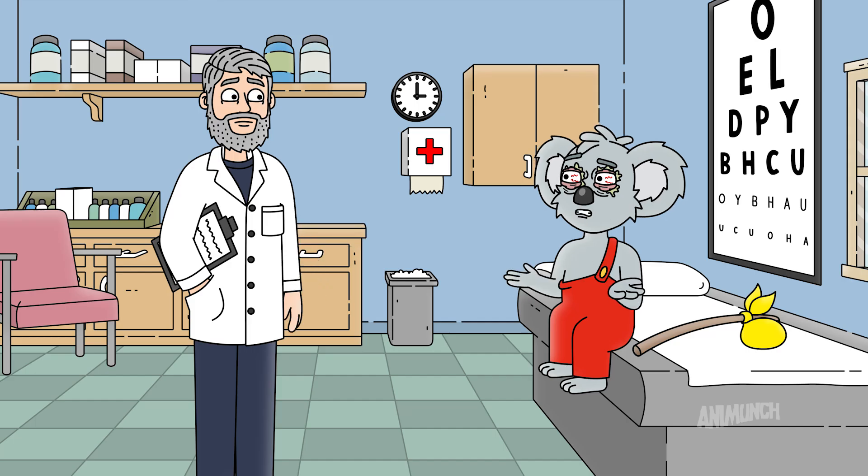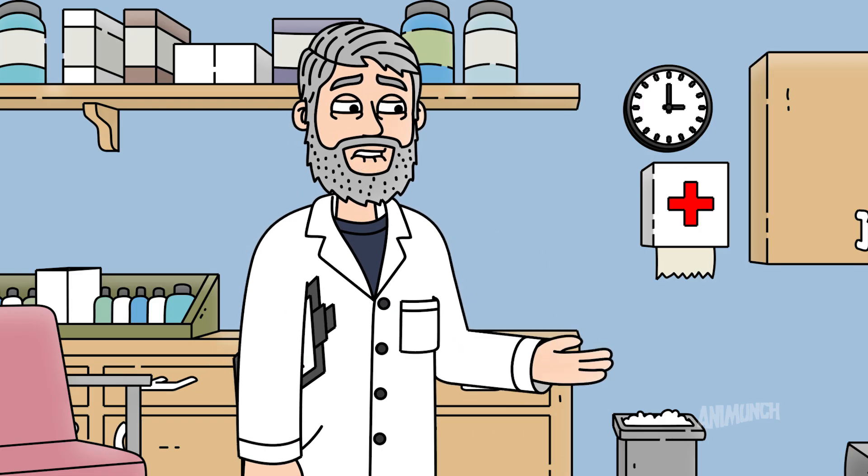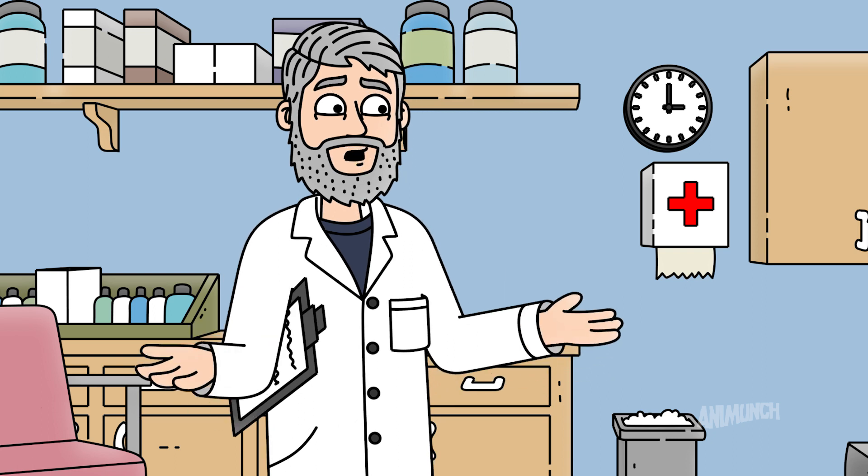But there's 50,000 of them Doc, do I have a second option? Well you could also flee the country, not tell them and cause a mass extinction of koalas in Australia but you wouldn't do that now would you Blinky?